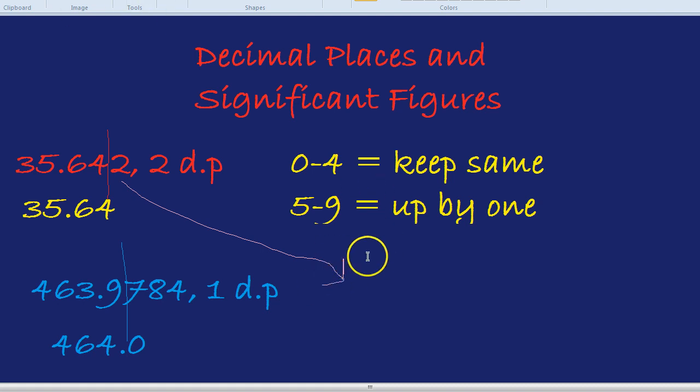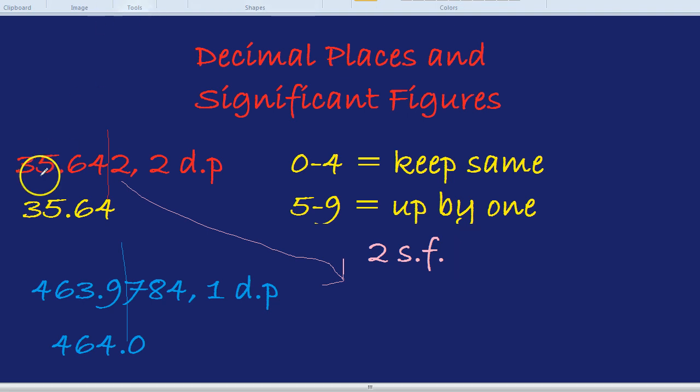But now the question is, they want that number to two significant figures, which they'd write as 2SF, or sometimes significant figures, but usually S.F. All we need to do is start counting from the beginning of the number. In this case, we count from the start and then we draw the line. 1, 2, now the line goes here.